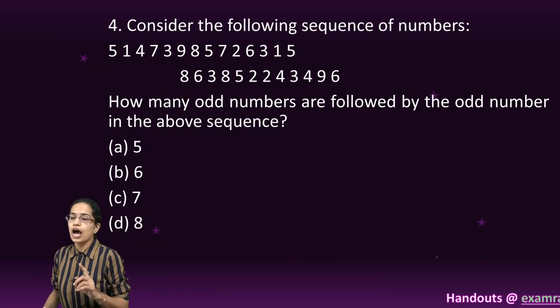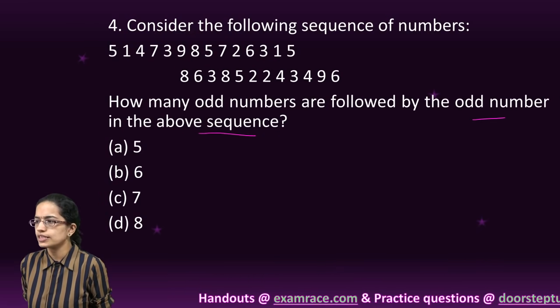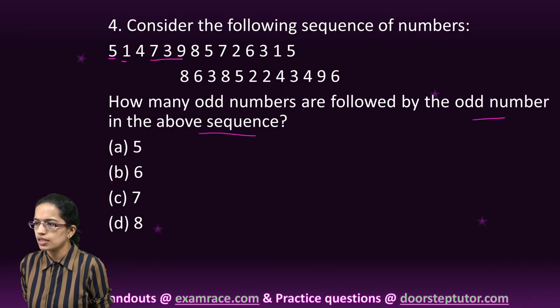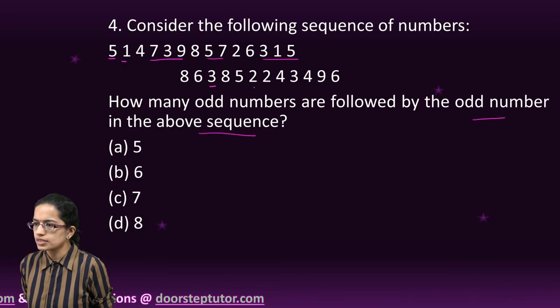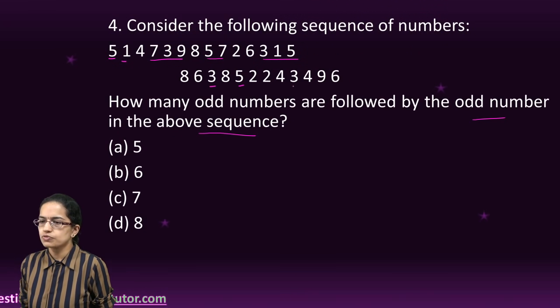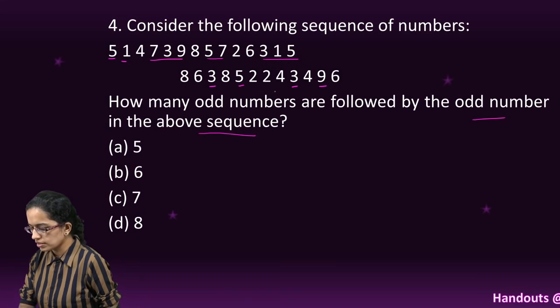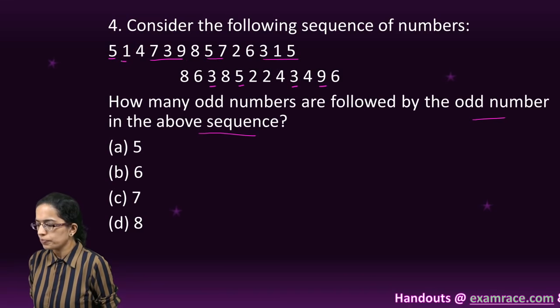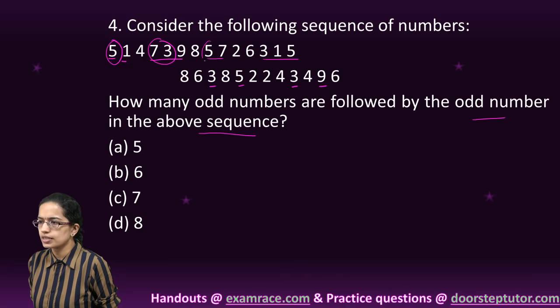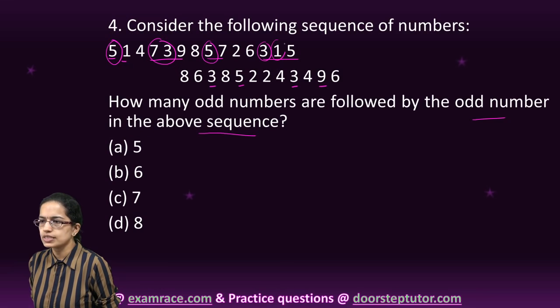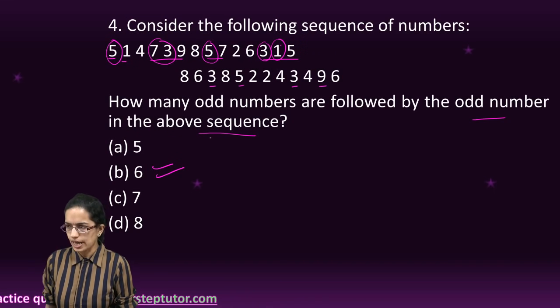The next question is how many odd numbers are followed by odd numbers in the above sequence. Let's first mark the odd numbers. From these odd numbers, we would see which of these follow. From the lower series, there's none. From the upper series, you have one number, then two, then four, five, and six. So six numbers follow.